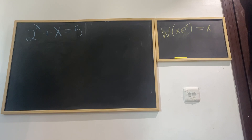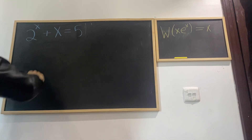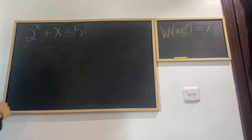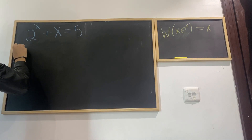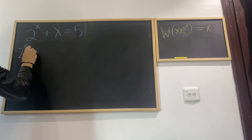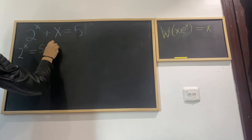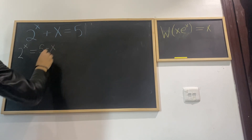Now let's get into the entrance exam question. First things first, let's take this x to the other side. So we get that 2 to the power of x is equal to 5 minus x.